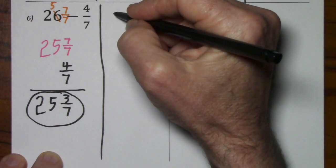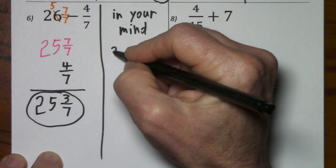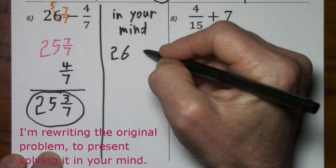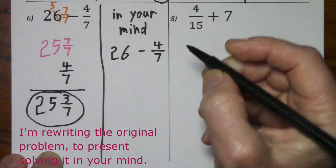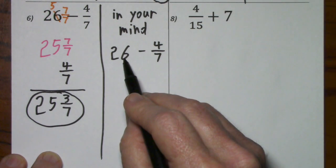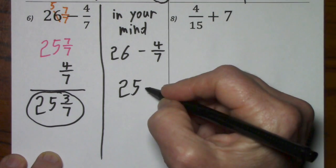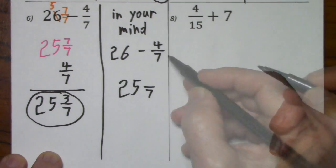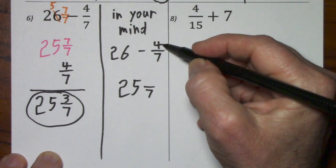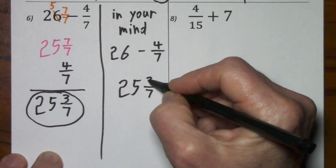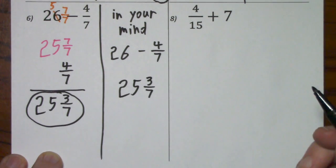Again, trying it in your mind. It's going to be a little less than 26. It'll be 25. You know the denominator is 7. So, how much do we need to make this a 1? You need 3 more. 25 and 3 sevenths. That's exactly what we got.